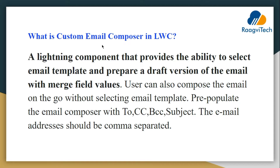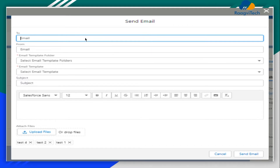First of all, what is custom email composer in LWC? It is a Lightning component that provides the ability to select the email template and prepare a draft version of the email with merge field values. The user can also compose the email on the go without selecting an email template, and pre-populate the email composer with To, CC, BCC, and Subject fields. The email addresses should be comma-separated. This is our email composer pop-up — here you can see To, From, email template folder, email template, subject, body, and the upload file section.